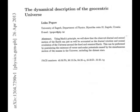I highlight here important extracts from the article. Those wishing to read the whole paper can pause the video. I have also put the paper on my website. The Dynamical Description of the Geocentric Universe, Luka Popov, University of Zagreb Department of Physics. Abstract: Using Mach's principle we will show that the observed diurnal and annual motion of the earth can just as well be accounted as the diurnal rotation and annual revolution of the universe around the fixed and centred earth. This can be performed by postulating the existence of vector and scalar potentials caused by the simultaneous motion of the masses in the universe including the distant stars.